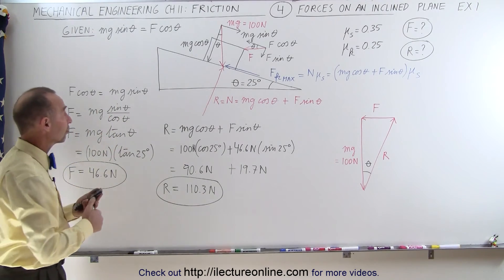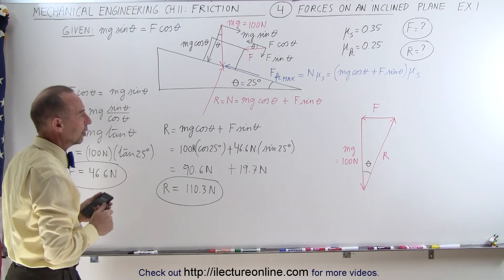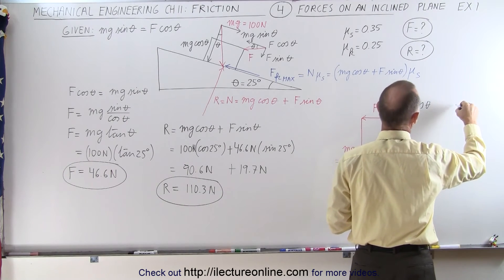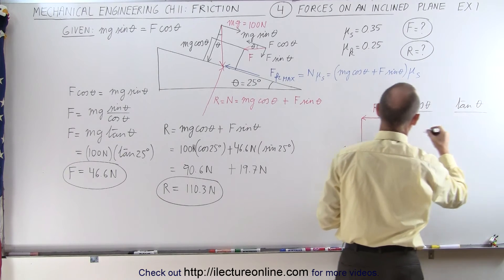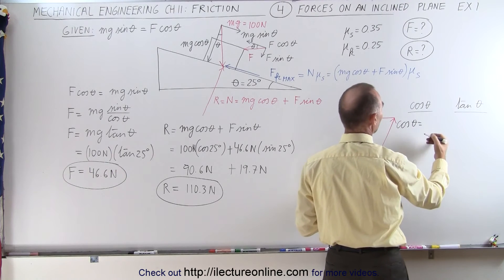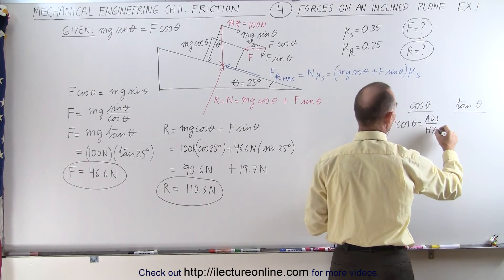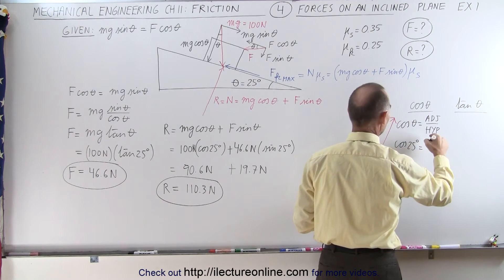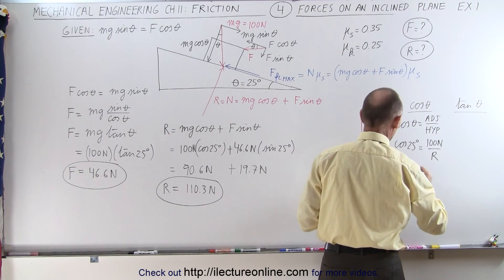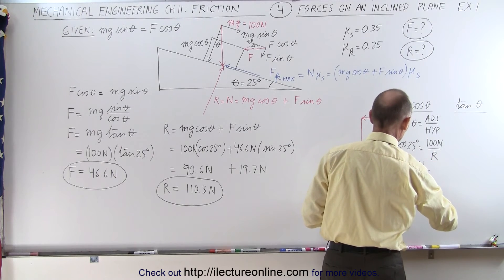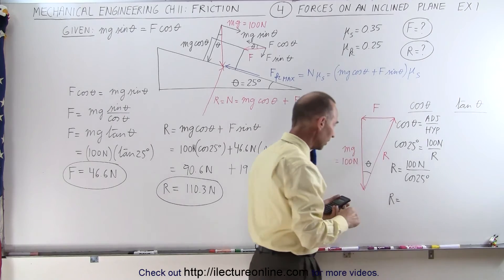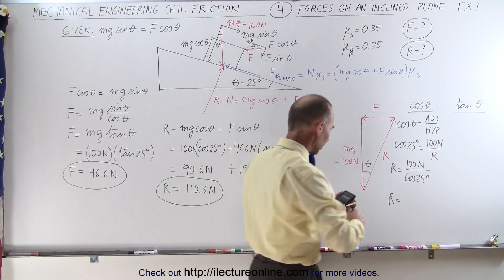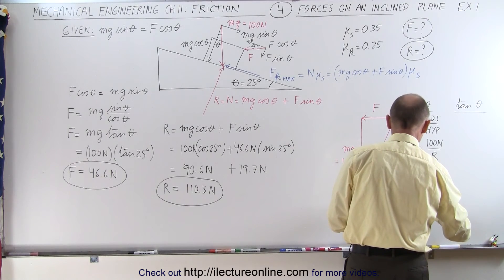That is how we solve it in the traditional sense — simply adding components of the forces to solve for F and R. However, we can also use the triangle formed by the three forces and apply the cosine and tangent relationships. The cosine of theta by definition equals the adjacent side over the hypotenuse. Here the adjacent side is 100 Newtons and the hypotenuse is R, so cosine of 25 degrees equals 100 divided by R, meaning R equals 100 divided by the cosine of 25 degrees — which gives exactly 110.3 Newtons.